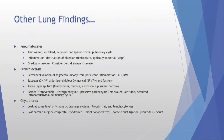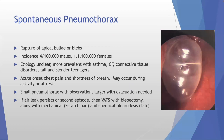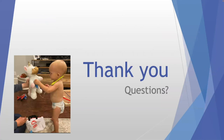For chylothorax, initial treatment is dietary modification — medium-chain fatty acids, avoiding long-chain fatty acids since long-chain lipids travel through the lymphatics. If dietary management fails, thoracic duct ligation and other interventions are options. Spontaneous pneumothorax in adolescents is a separate topic. These are the key congenital and acquired lung lesions — any questions?